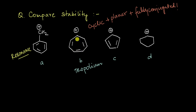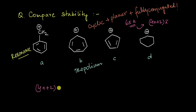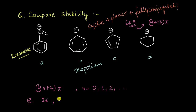Now if you count the total number of pi electrons that are getting delocalized out here, we have 2 plus 2 plus 2, so we have 6 pi electrons that are getting delocalized, and this falls under Hückel's 4n+2 system. So if we recollect: if the total number of pi electrons equals 4n+2, where n can be 0, 1, 2 and so on — when n equals 0 we get 2 pi electrons, when n equals 1 we get 6 pi electrons.